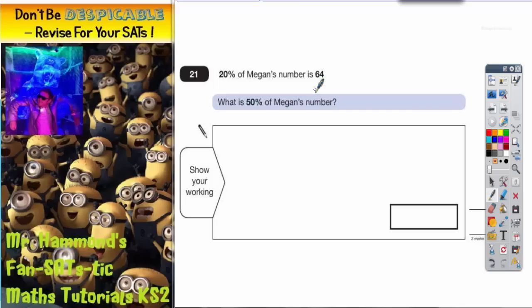Now I don't really care what the number she thought of is. I just need to figure out what 50% of the mystery number is. We need to get from 20% to 50%. Now there's actually a couple of different ways you could do this.